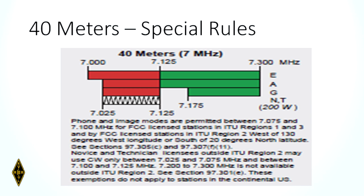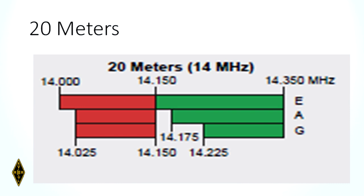There are some special rules having to do with Guam, the Marianas Islands, and Hawaii — that's in the fine print below 40 meters. We already talked about that: they're in a different ITU region, so they have some different characteristics. On 20 meters, notice there are no novice or technician privileges — you only get 20 meters when you get a general class license.